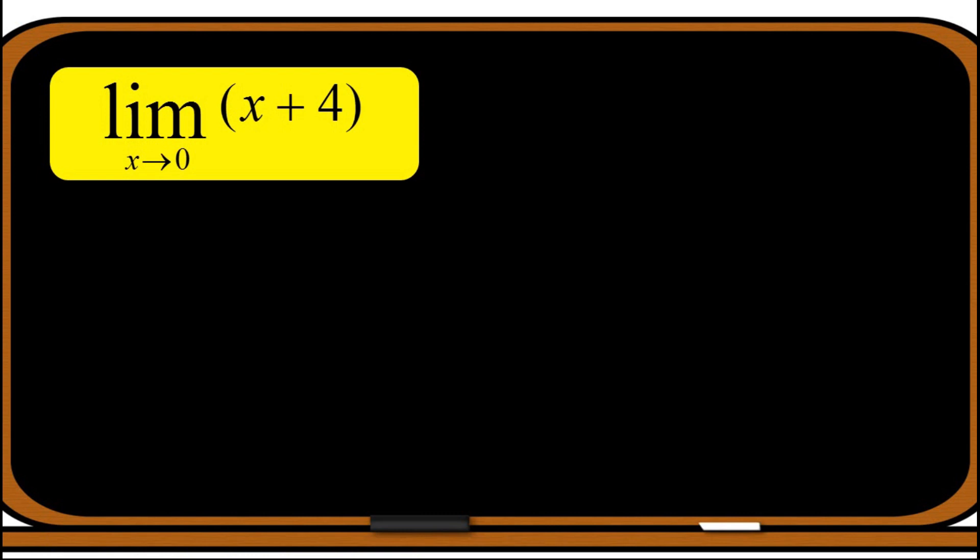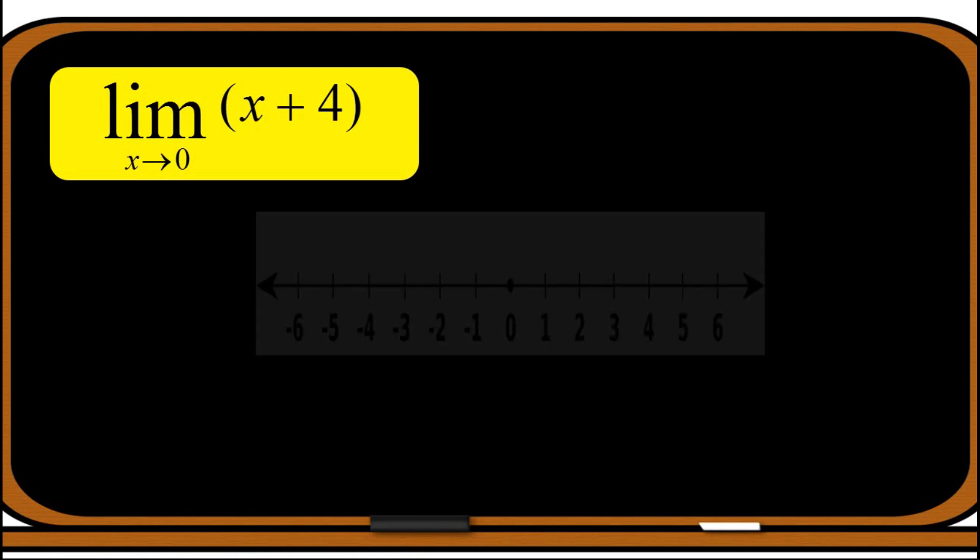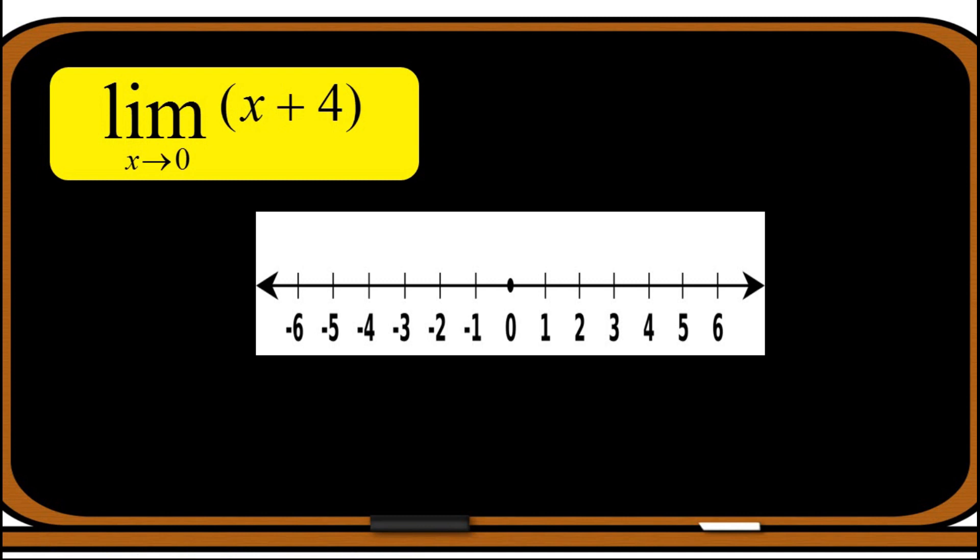Consider this given problem: the limit of x plus 4 as x approaches 0. The question here is, what value will the function approach as the independent variable x approaches 0? If we have a number line, there are two ways to approach 0. It can be through values on its left and through values on its right.